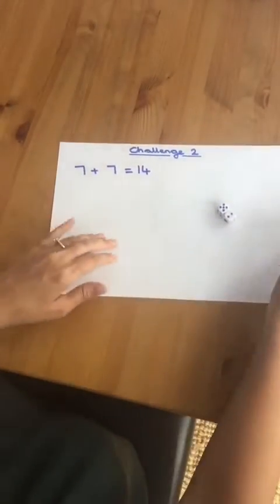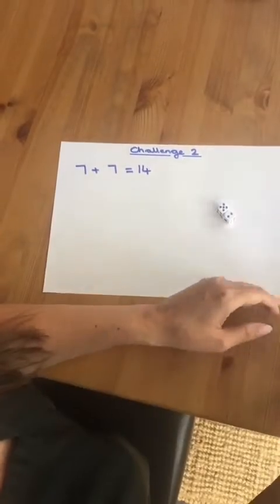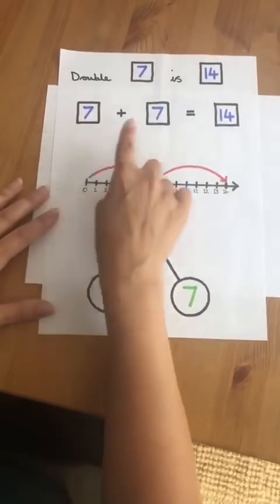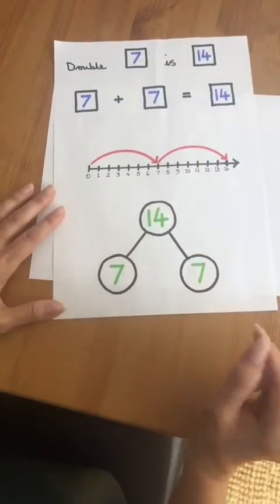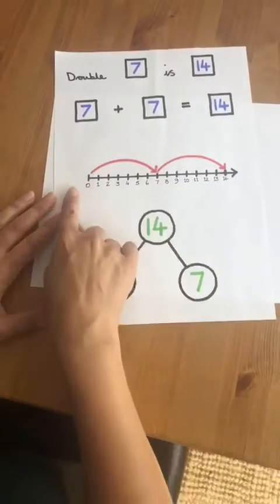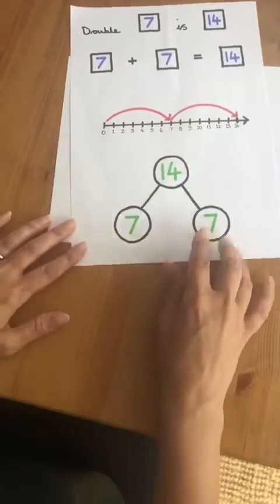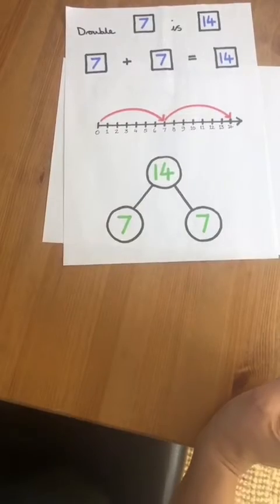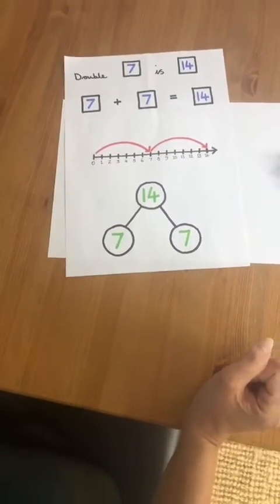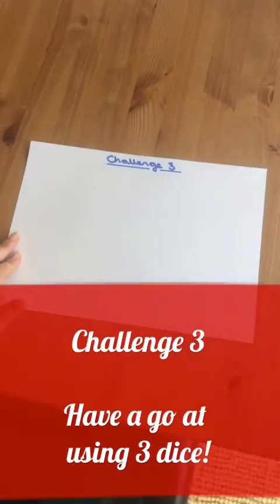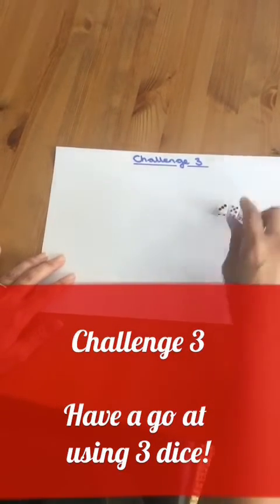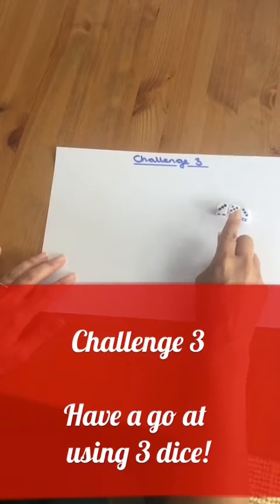For those of you in Year Two, I think you could challenge yourself by writing your answer in different ways. You could write your double as an addition sentence. Seven add seven is fourteen. You could have a go at writing your double on a number line. Seven plus seven is fourteen. Or you could use a part-whole model. Seven plus seven is fourteen. Challenge three. For challenge three, you're going to need three dice. You're going to roll three dice, then add them together. One, two, three, four, five, six, seven, eight, nine, ten, eleven.